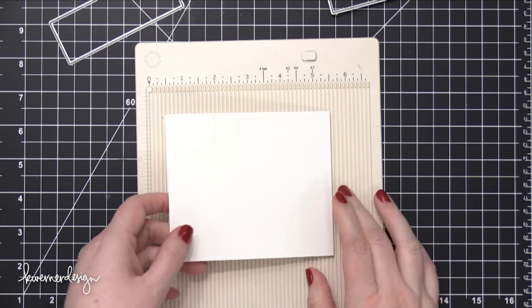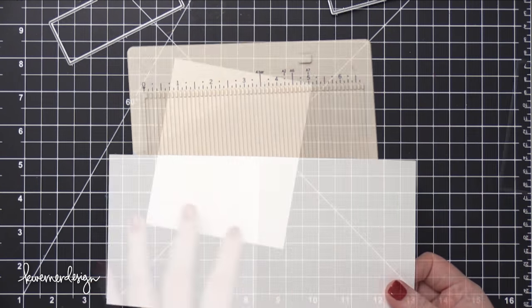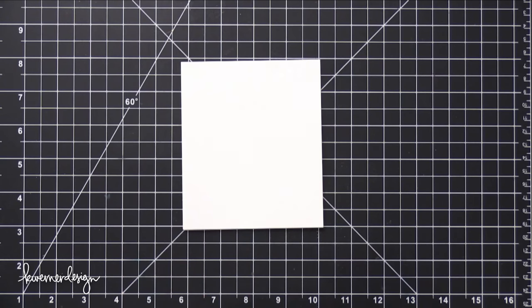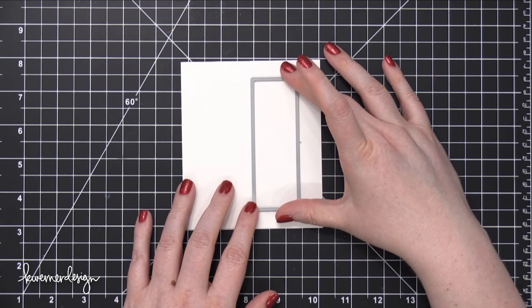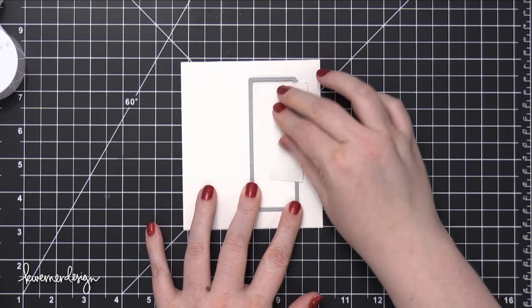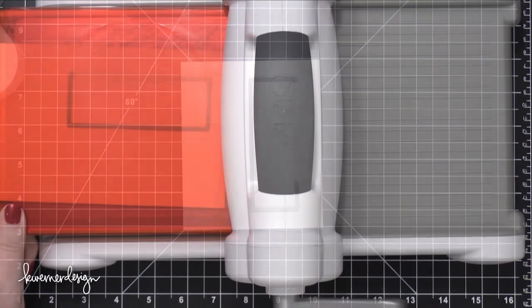So I've scored that and folded it over so it has a nice crease. Now I'm going to take the rectangle die. There's another die that looks sort of like this, but it has a rounded end on it. You don't want the rounded end at this point. You just want the rectangular die.